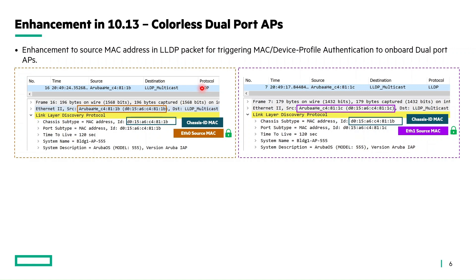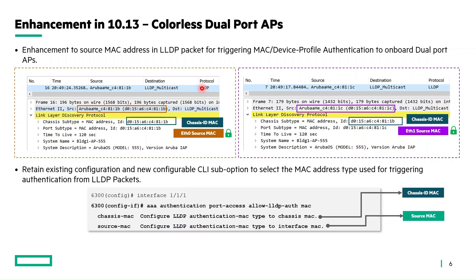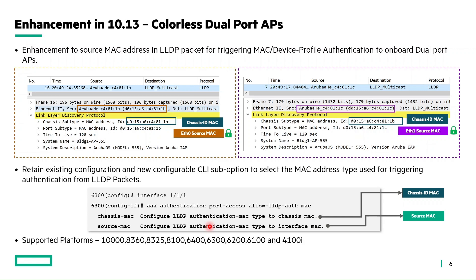To achieve this, a new CLI sub-option is introduced to select the MAC address type used for triggering authentication from LLDP packets. The CLI is: AAA authentication port-access allow-lldp-auth MAC, with a sub-option allowing selection of either chassis MAC or source MAC. This feature is supported on all port access security enabled platforms listed.